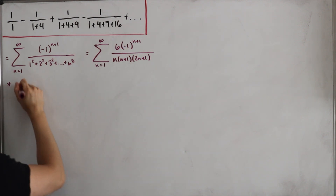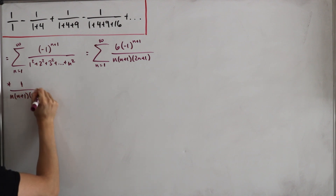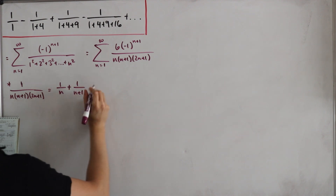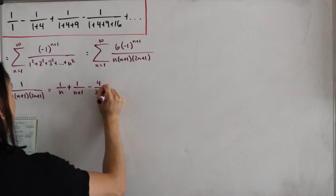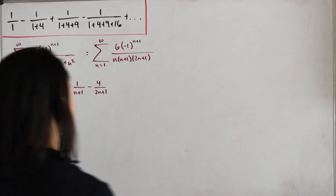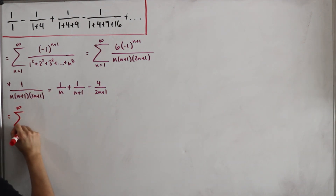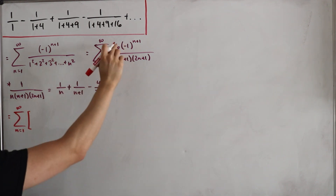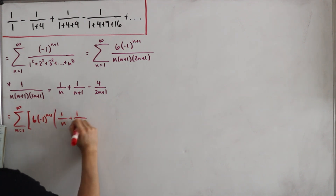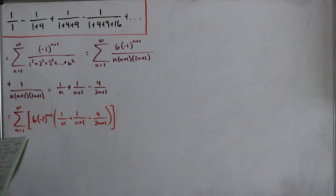Let's focus on just the denominator. Applying partial fraction decomposition — I'll leave the calculations as an exercise — we get that 1/[n(n+1)(2n+1)] decomposes as 1/n plus 1/(n+1) minus 4/(2n+1). So the full expression can be rewritten using this decomposition.